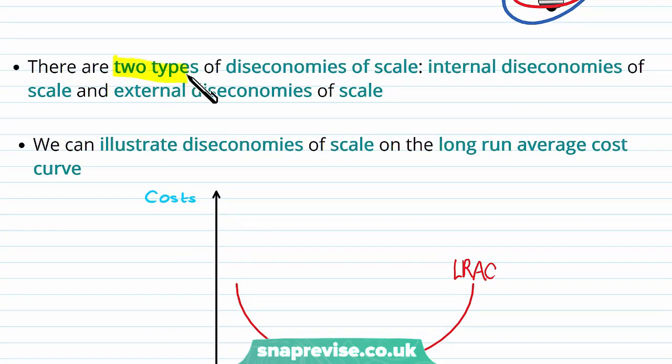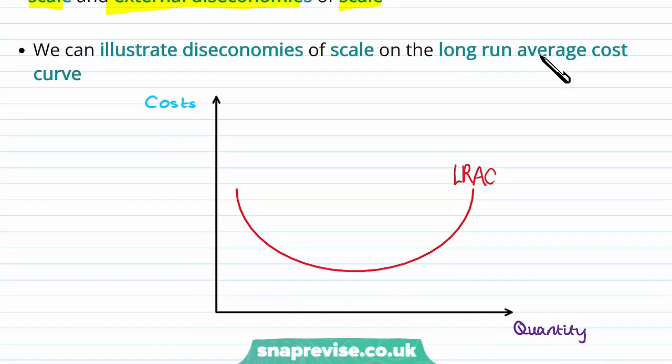Now there are of course two types of diseconomies of scale: internal diseconomies of scale and external diseconomies of scale, which will be covered in a later video. And we can illustrate our diseconomies of scale on the long run average cost curve.